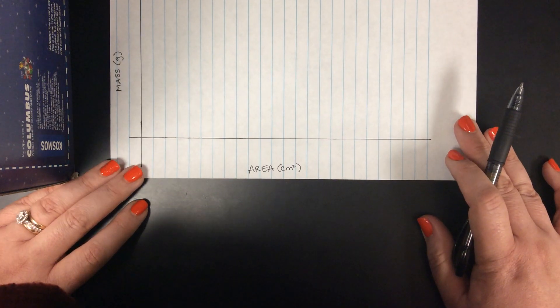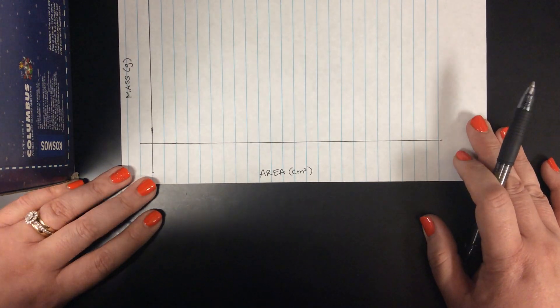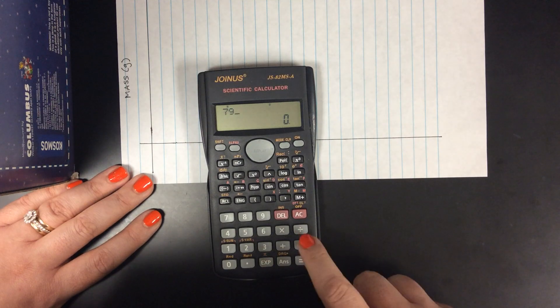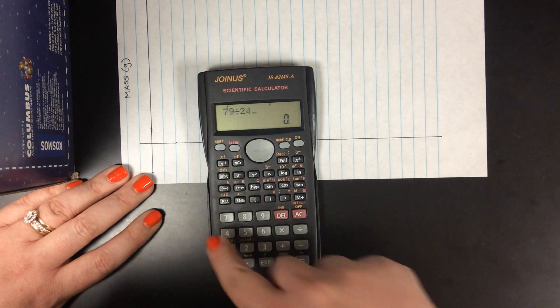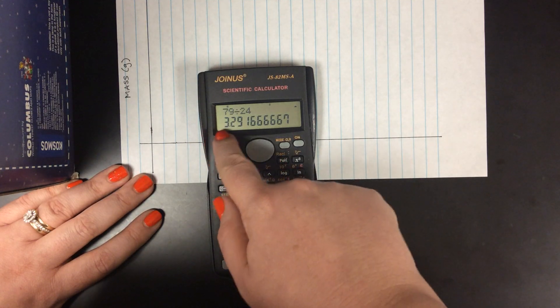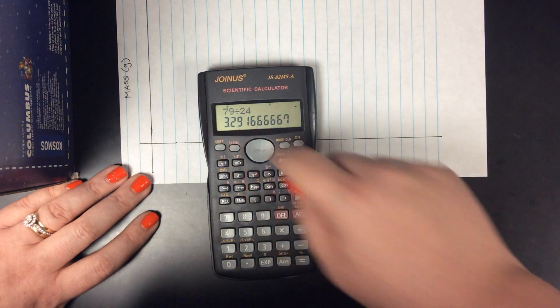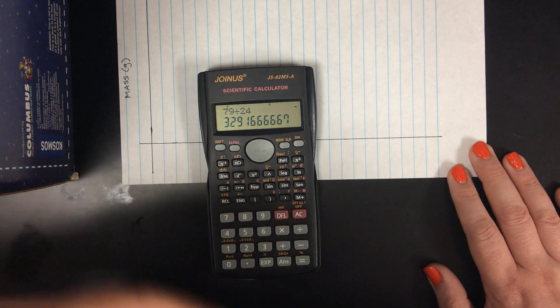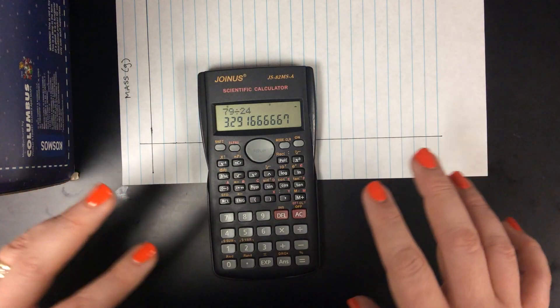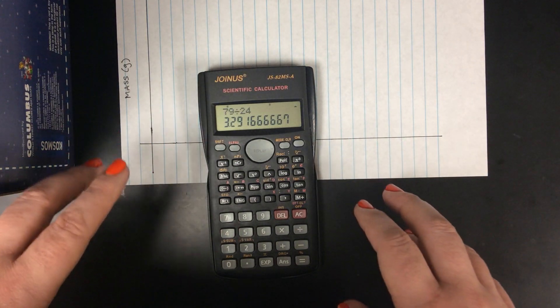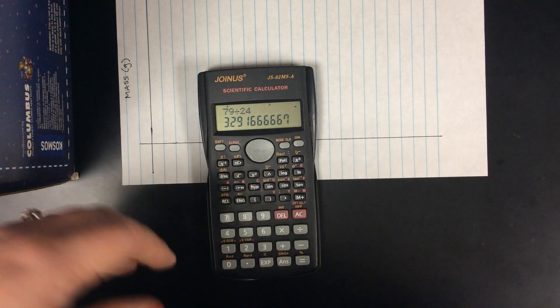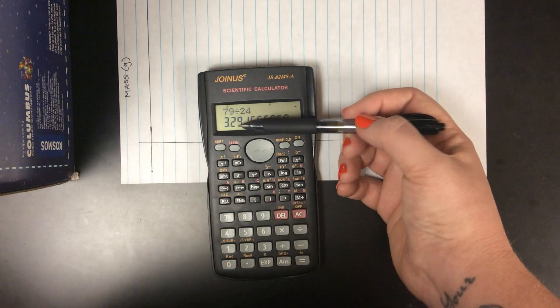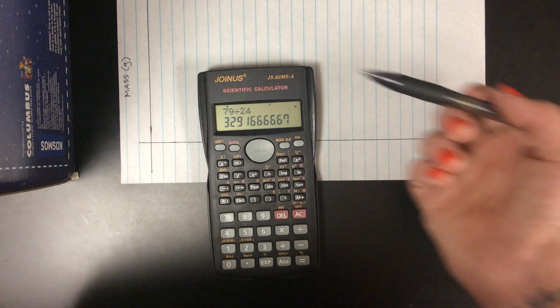Now let's say that my highest area is 79 centimeters squared. I'm going to take my highest area and I'm going to divide it by how many lines I have to work with. Now I get this really long, weird number. I don't want to count by 3.291666666666. I want to round that up to a number that's easier to work with. Always round up when you're scaling a graph axis. If you round down, you're going to run out of space. If you round up, you always know that you have plenty of space to work with. So in this case, I'm going to round up to 4 and I'm going to count by 4s.